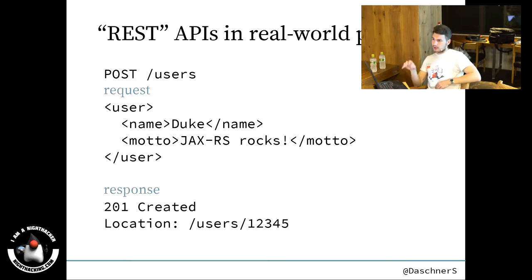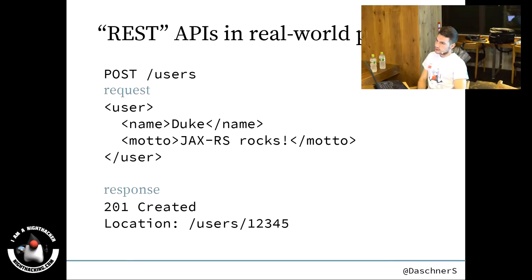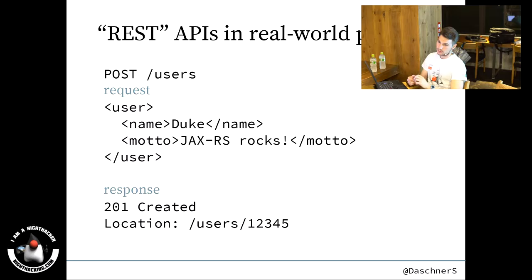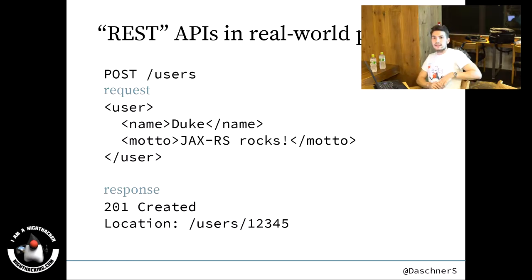This is another example about how HTTP can be used following its semantics. Here you want to create a user — you're not calling POST create some user with a method, rather you have the resource, that list of users, and now you're posting a new user or the representation of a new user in its request body using XML data, like a user with a username and a model. As a response, you get an HTTP status code back. It's not always 200 OK; rather, you have several status codes as defined in the HTTP RFC spec. In this case it's 201 Created, which says a new resource has been created on the server, and the location header even tells us the URL of the newly created user, which is users slash 1345.